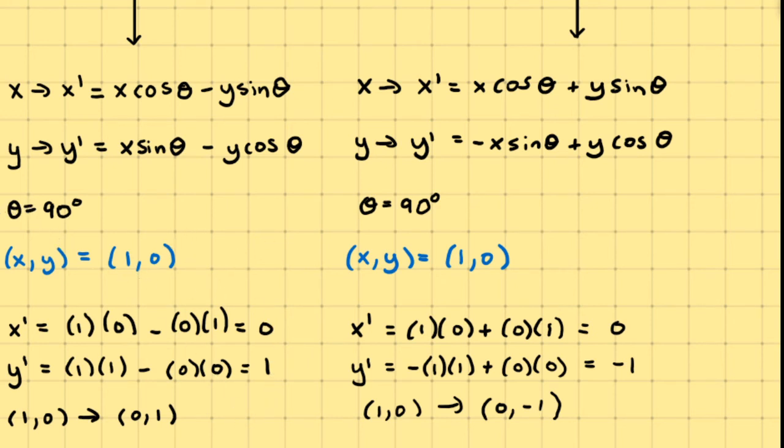So, if we take theta equals 90, and our beginning point is the point 1, 0, and we perform the transformation, what do we get? Well, we substitute x equal to 1, theta is 90 degrees, and y is 0.